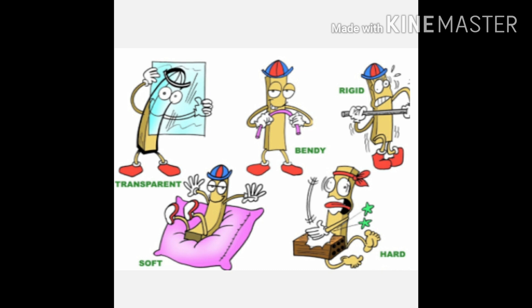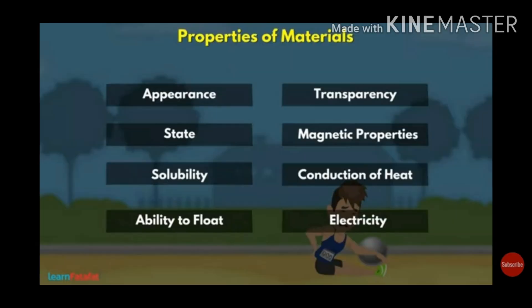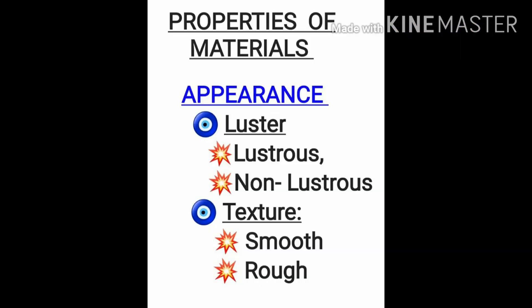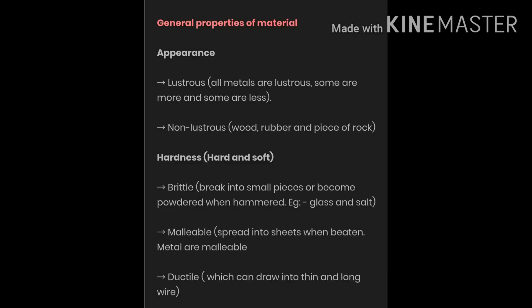Different properties can be used to classify materials: appearance, transparency, ability to float according to density, and magnetic properties. Conduction of heat and electricity can also be used. We will study a few selective properties. These properties include appearance such as luster — whether materials are lustrous or non-lustrous — and their texture.